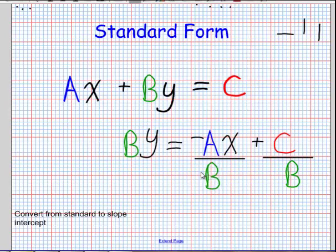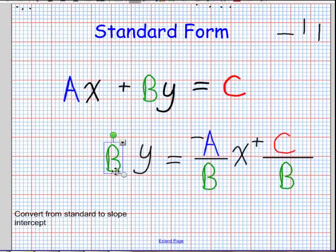And it looks a little different, but that's because these are written negative A over B. And since I divided everything by B, this goes away. So I get y equals negative A over B times x plus C over B.